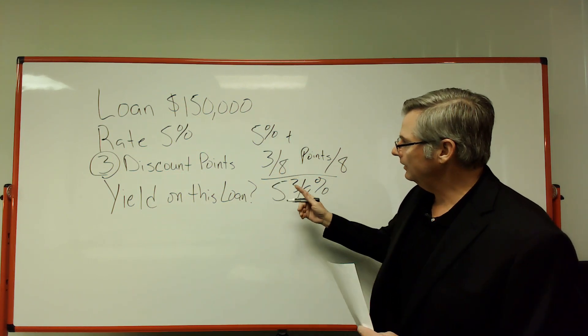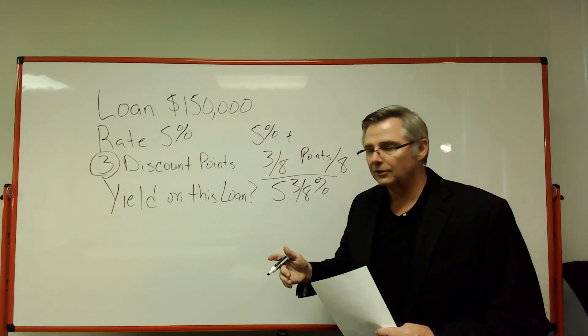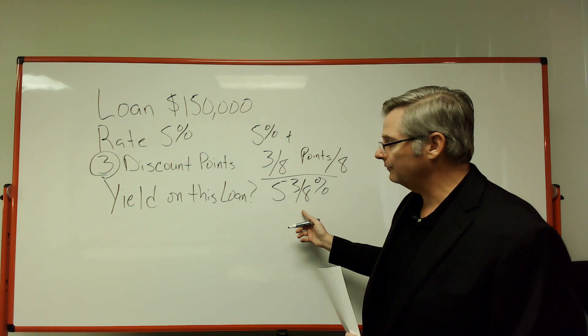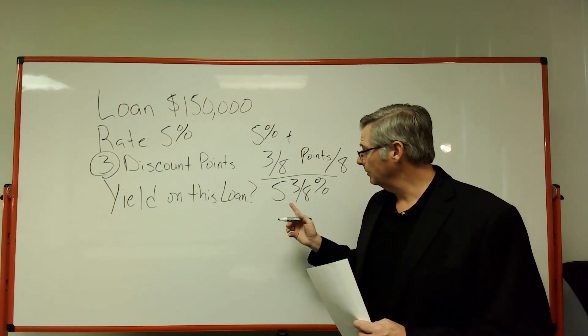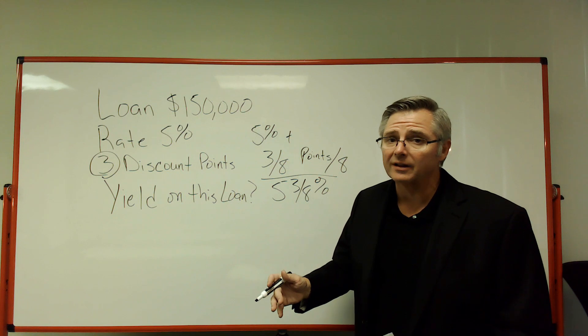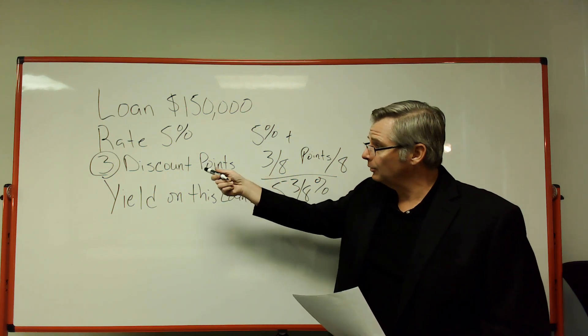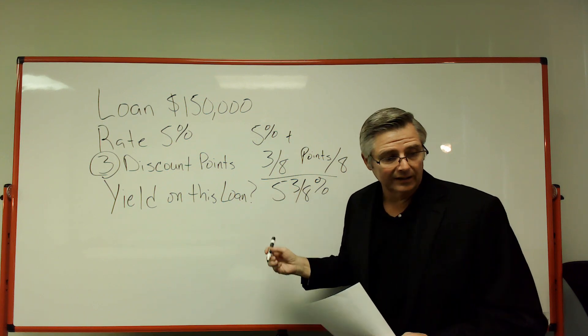Now, they may ask you in a percentage. So you would take the fraction and turn that to a percentage, which would be 5.375%. Remember, you take top numbers and divide by bottom numbers if they ask you that. In this case, that's pretty simple. Number of points over an eighth, and you got your answer.